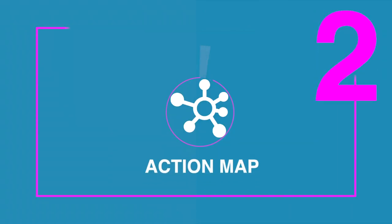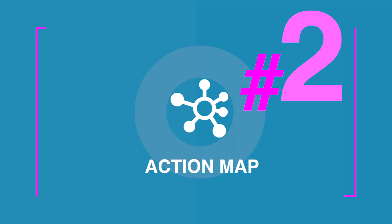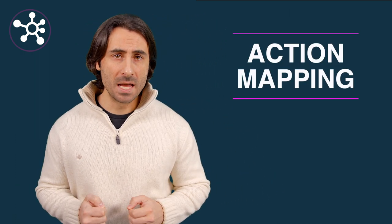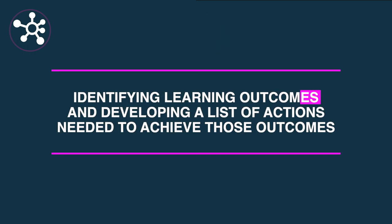Number two: action map. E-learning practitioners are always looking for powerful ways to keep the course development process as efficient and well organized as possible. To set up a creative workflow and streamline the design of your e-learning course, we may need to think about a technique known as action mapping. The process of action mapping walks you through identifying learning outcomes and developing a list of actions needed to achieve those outcomes.